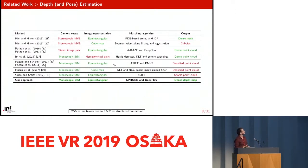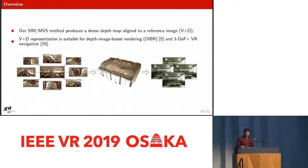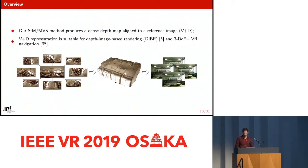These are some related works. Most of them have complex camera setups, can deal only with stereoscopic images, or rely on temporal coherence requiring video input. Our approach is different: we need only a reference image and other supporting images placed with some baseline from it. Our method outputs a dense depth map registered to the reference image, which can be used for image-based rendering applications and three degrees of freedom plus VR navigation.